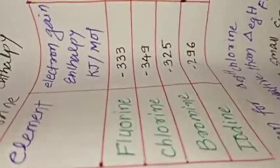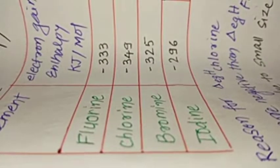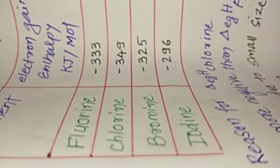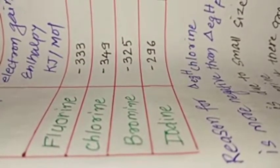Let's have a look at these values. We have the various elements and their electron gain enthalpy. You can see here: fluorine has -333, chlorine has -349, bromine has -325, and iodine has -296. While coming from fluorine to chlorine, the value becomes more negative. But going from chlorine to bromine to iodine, the value becomes more and more positive, or less and less negative.